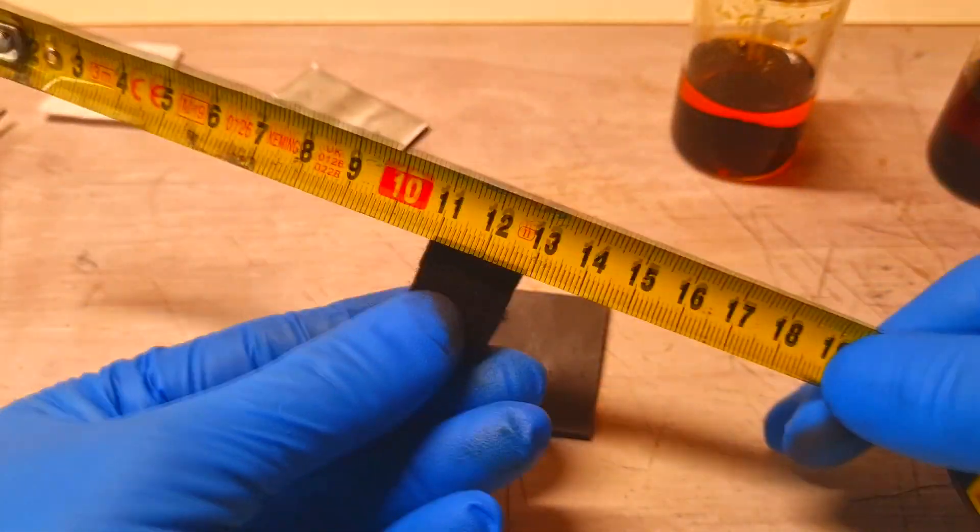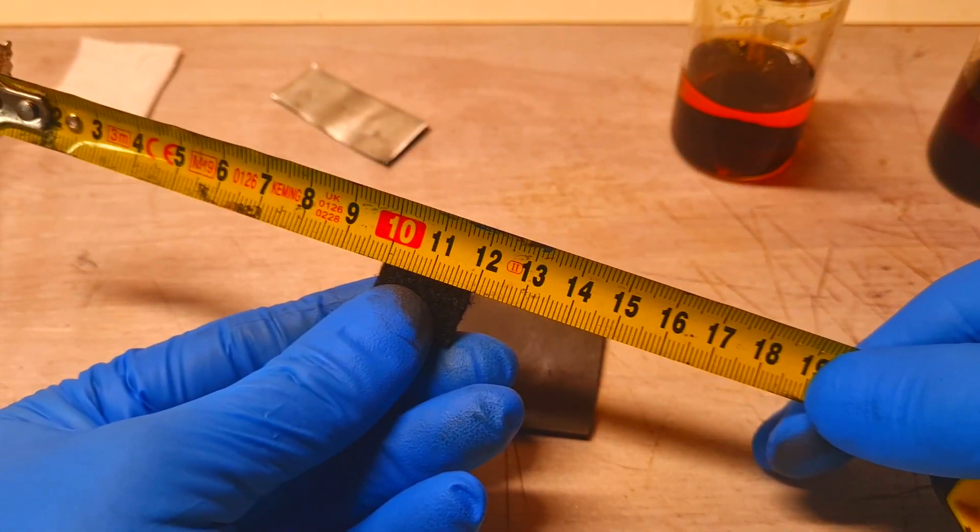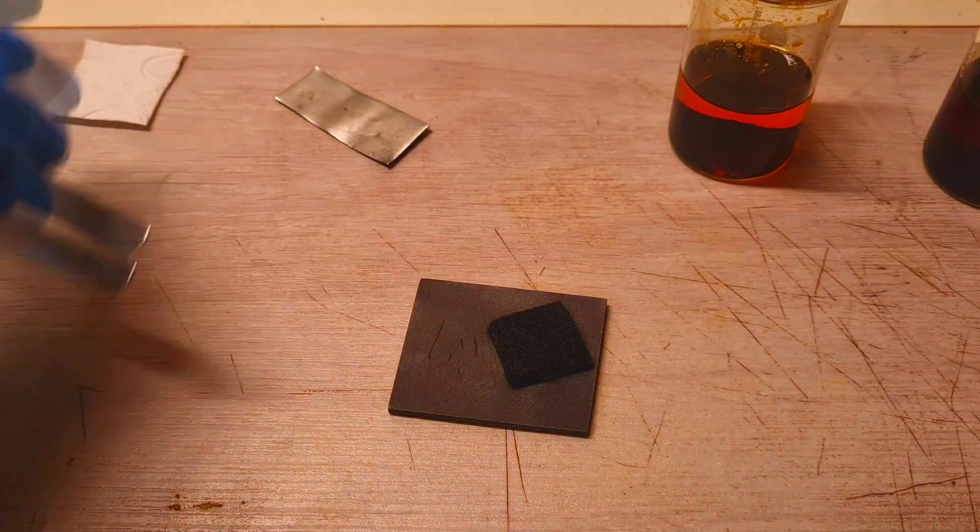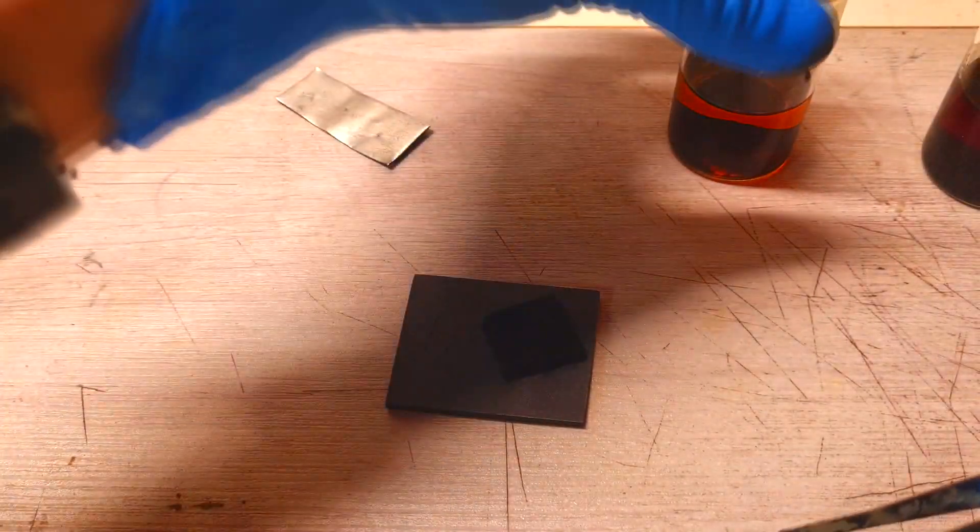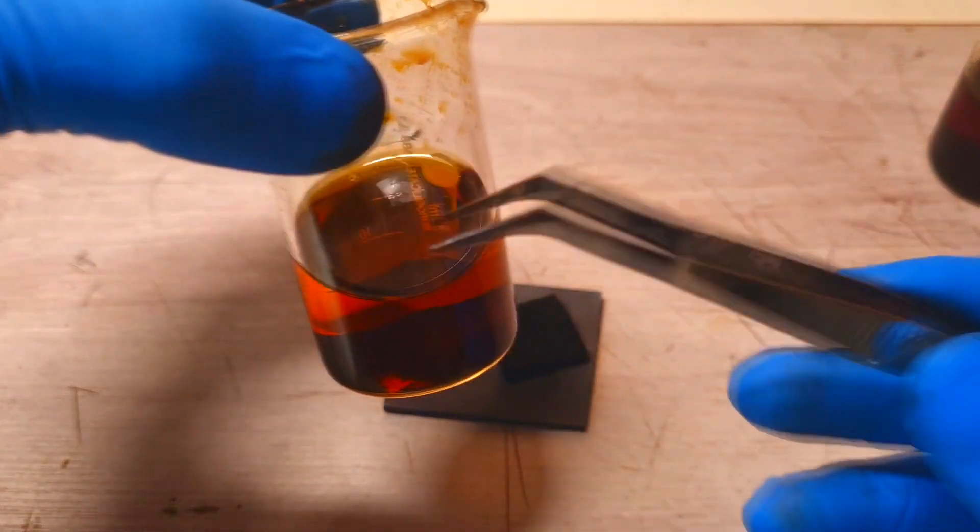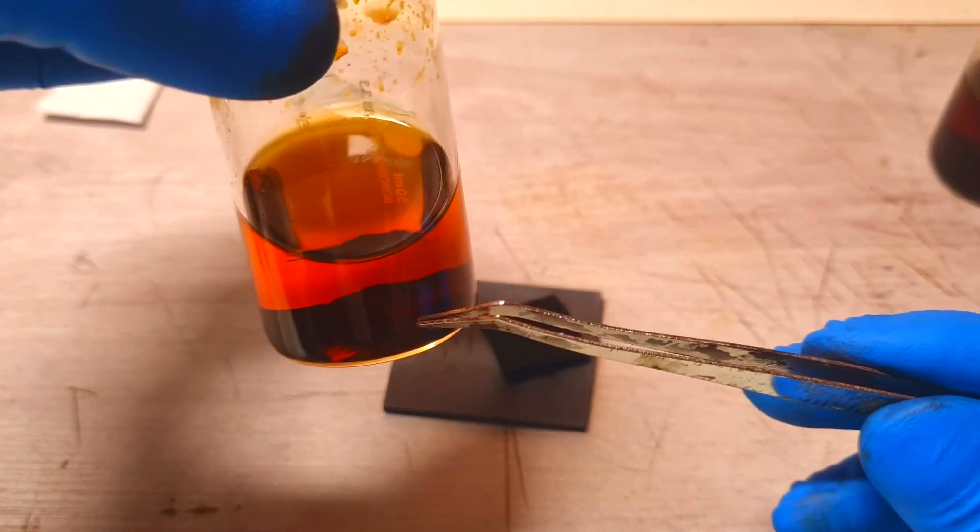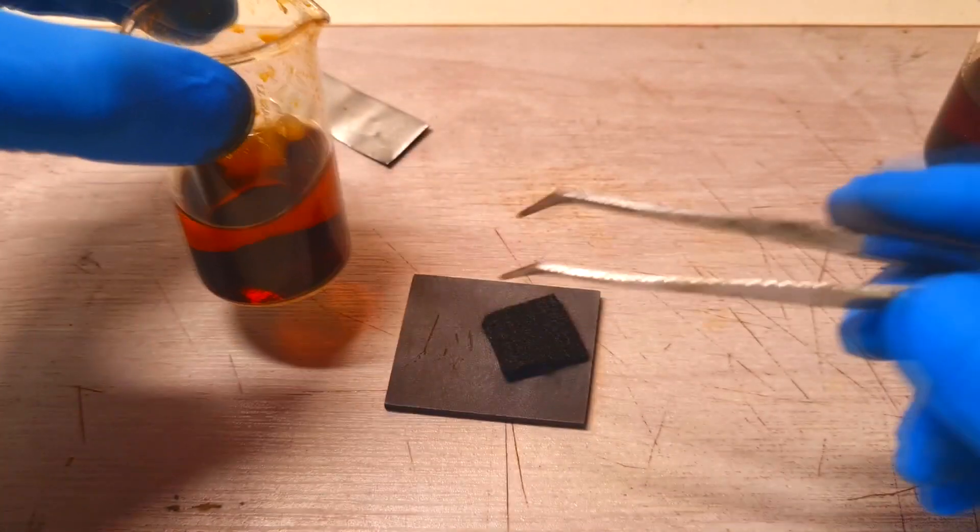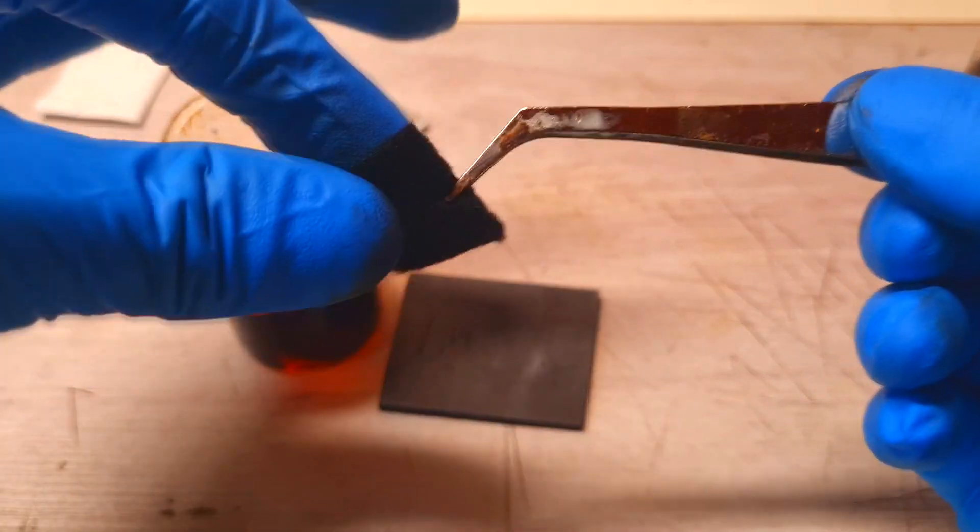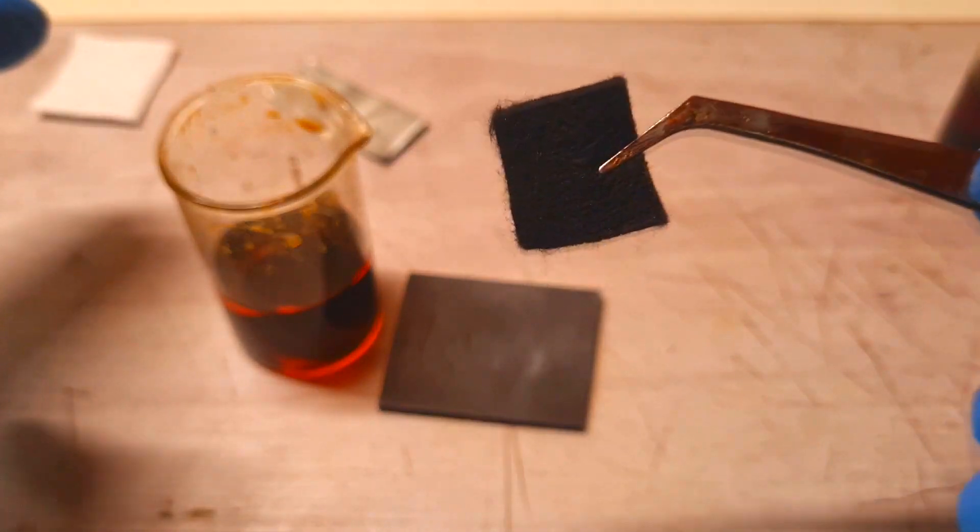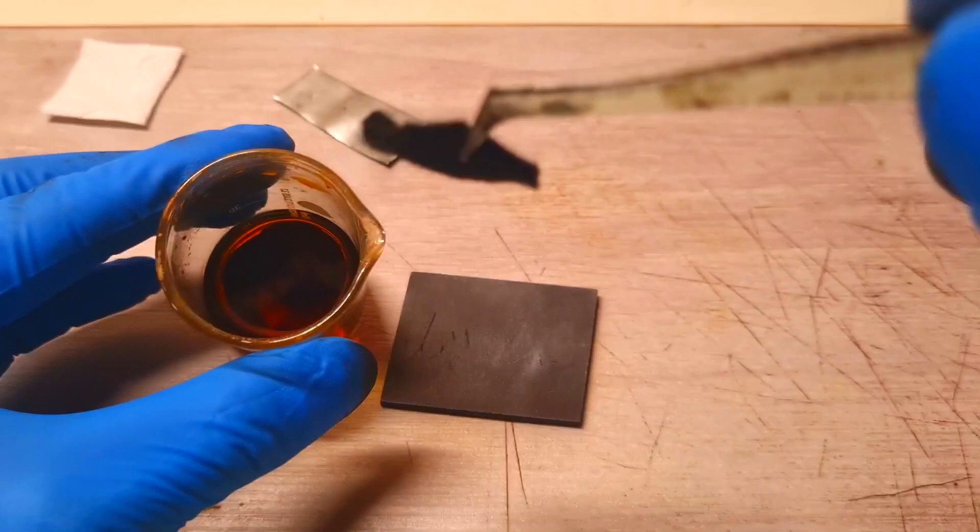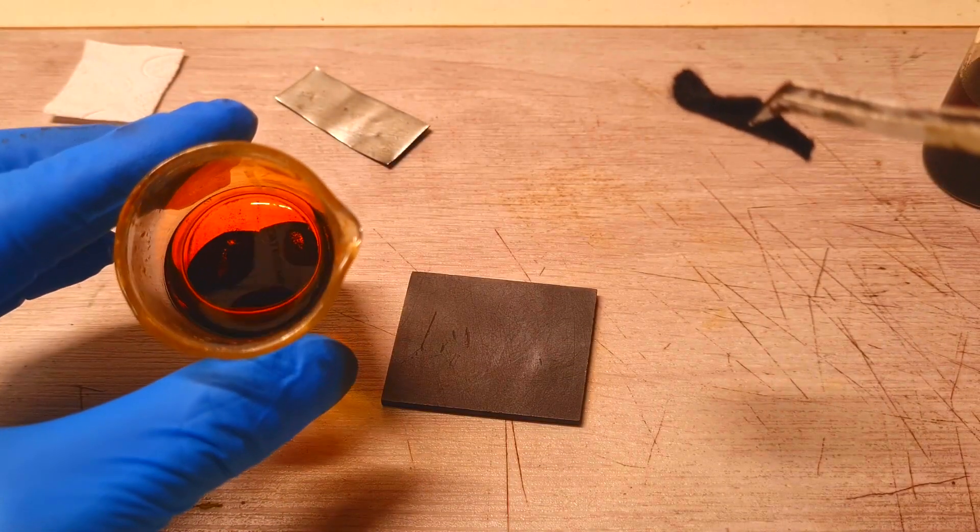Here I have this electrolyte and here on the bottom I have this iodine. With this carbon felt I will try to collect some of the iodine which is here on the bottom.